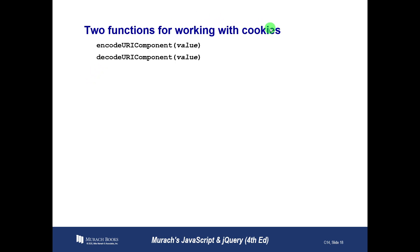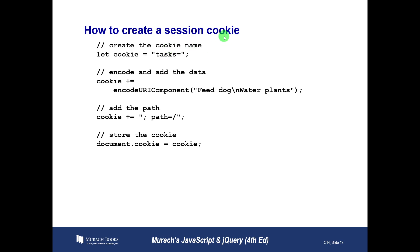There are also a couple of functions for working with cookies: encodeURIComponent and decodeURIComponent. Cookie values can't include semicolons, commas, or white space. So if you've ever typed a name like 'George Jetson' with a space and then seen 'George%20Jetson' in the URL — that comes from encodeURIComponent converting that white space to %20, which is the ASCII number for a space. decodeURIComponent reverses that process. Those are two functions we use when working with cookies.